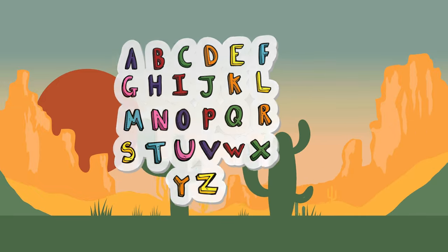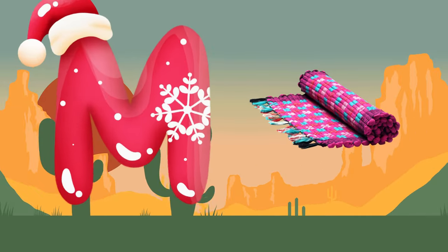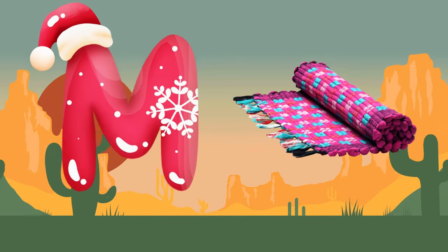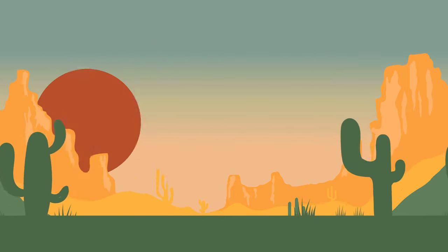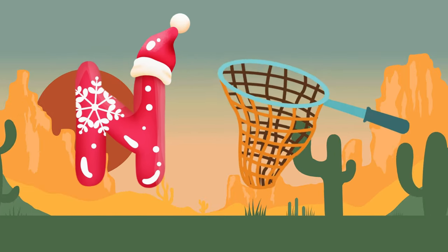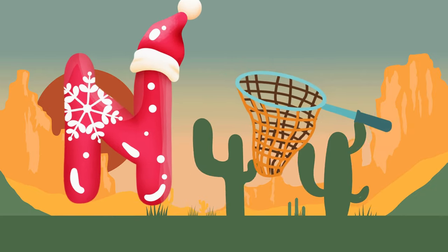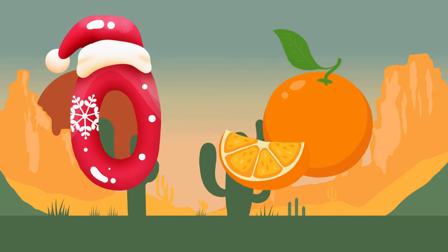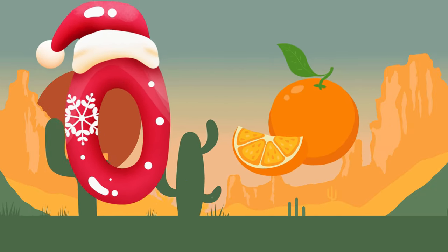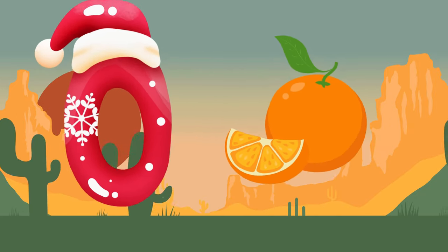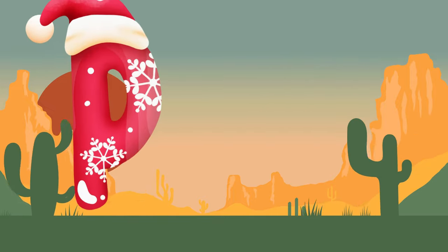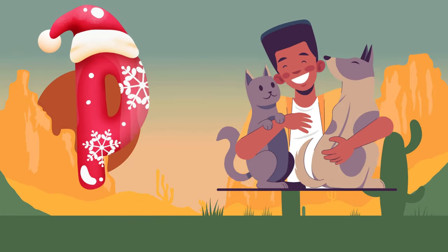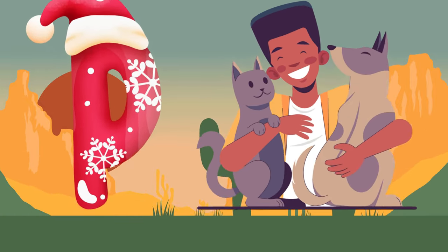M is for mat, m-m-mat. N is for net, n-n-net. O is for orange, o-o-orange. P is for pet, p-p-pet.